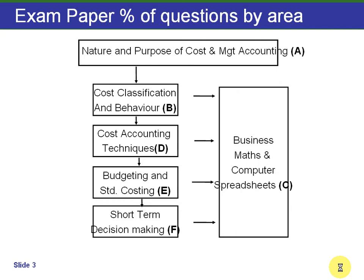This is the relationship diagram from the syllabus guidelines included on the ACCA website. It shows the six areas A through F of the F2 syllabus, and what I want to show you in particular is the weighting — the exam paper percentage of marks by each of these areas.